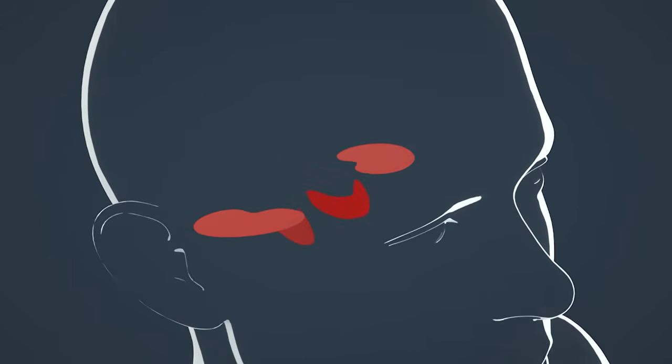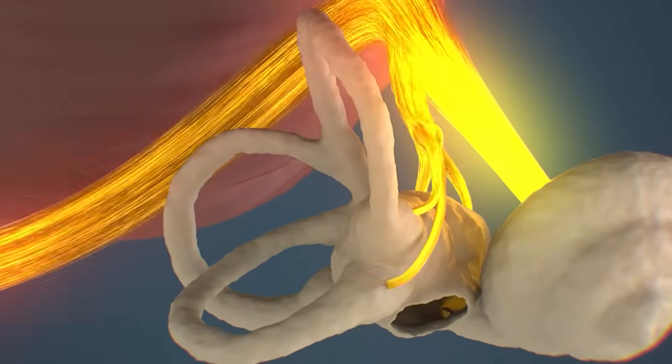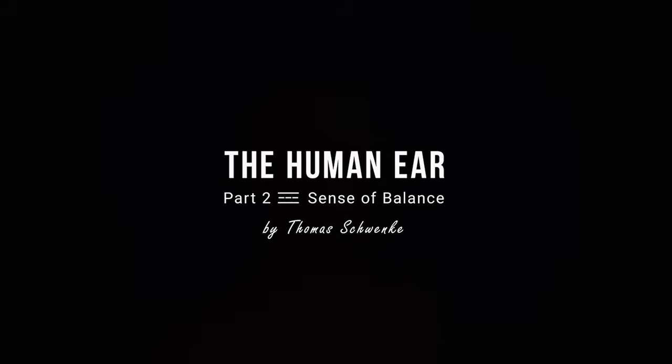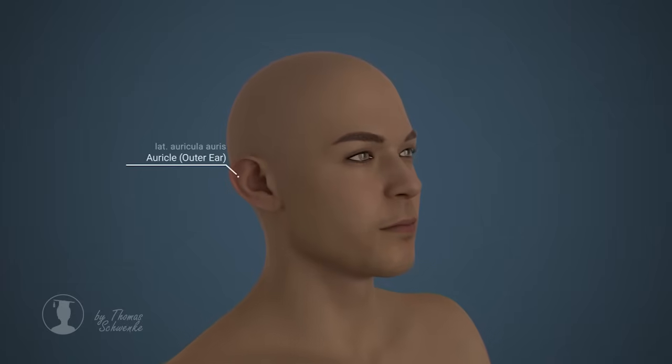In the first part of this series, we have looked at the sense of hearing. In this part, we want to describe the sense of balance in a simple way. It is highly recommended to watch the first part first, as it explains the general structure of our ear.